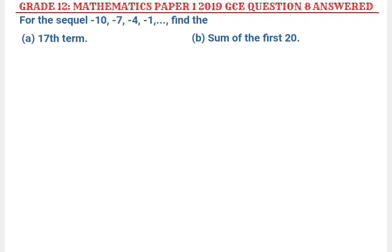This is the question that came in the 2019 GCE Grade 12 examination, Mathematics. For the sequence: negative 10, negative 7, negative 4, negative 1, and so on — the three dots indicate the numbers continue going.